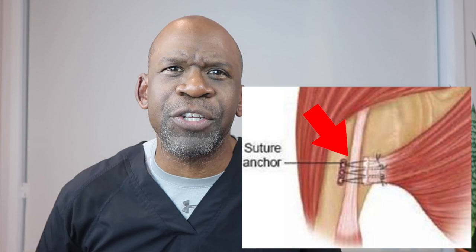Basically, we make an incision at the axilla — the armpit — and stick a couple of screws that have sutures attached to them, which we sew through the tendon and reattach to the bone.